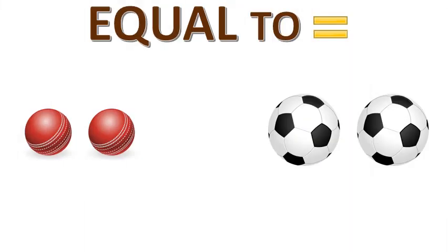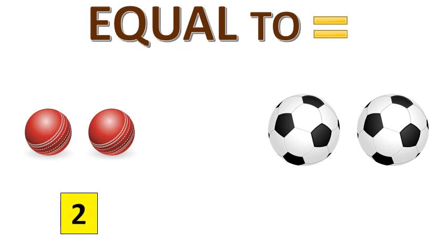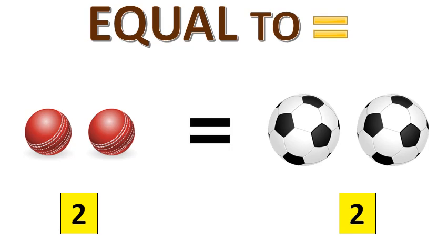Now let's take an example to understand the equal to concept. Here we have some cricket balls and also some footballs. Let's count the cricket balls: 1, 2. So we have 2 cricket balls. Now let's count the footballs: 1, 2. So here the number 2 is equal to 2 — they are equal.